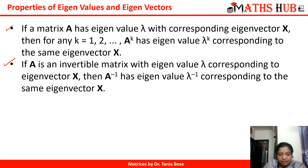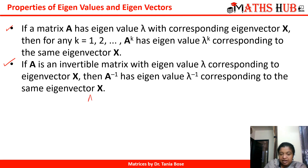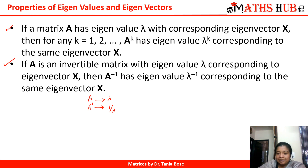The fifth property: if A is an invertible matrix with eigenvalue lambda corresponding to eigenvector x, then A inverse also has eigenvalue lambda inverse — that is, 1/lambda — corresponding to the same eigenvector x. So if A has one of its eigenvalues as lambda, the inverse matrix will have eigenvalue 1/lambda. Just invert the eigenvalue.